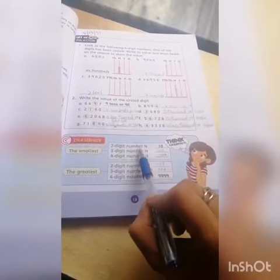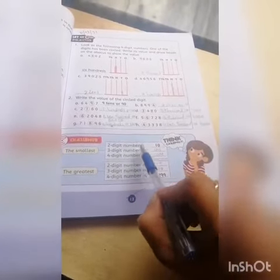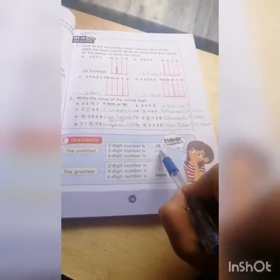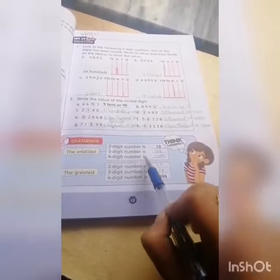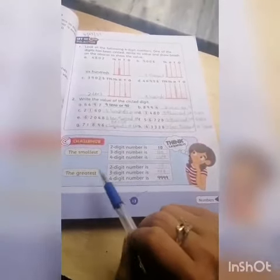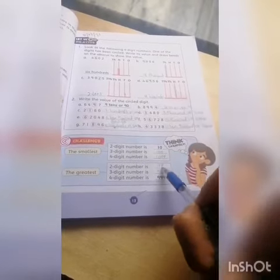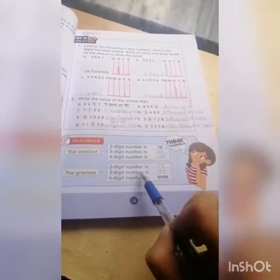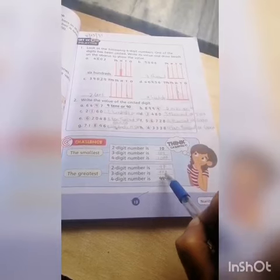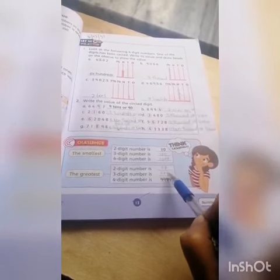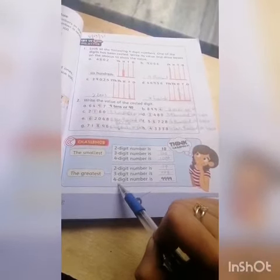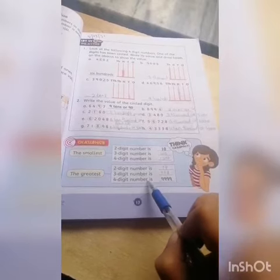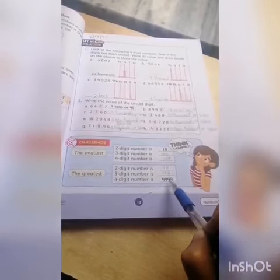And our challenge: The smallest two-digit number is ten. Smallest three-digit number is hundred. Smallest four-digit number is thousand. The greatest two-digit number is ninety-nine. Three-digit number is nine hundred ninety-nine. Greatest four-digit number is nine thousand nine hundred ninety-nine.